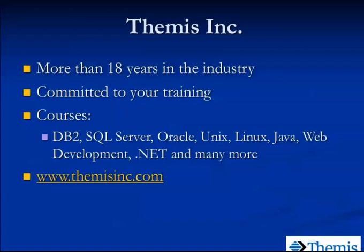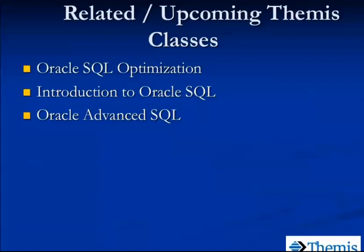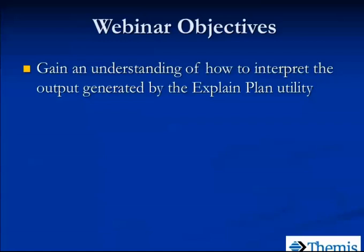Today's topic is related to one of our other classes called Oracle SQL Optimization, which is for developers and DBAs both. The webinar will last about 45 minutes or so, and we're going to talk about ExplainPlan — that utility — and what it's used for, but more importantly, what are some of the things that we're going to look for in that environment. We want to make sure we know what types of things we should look for, what types of things we should give a higher priority to, and how to look for those things.